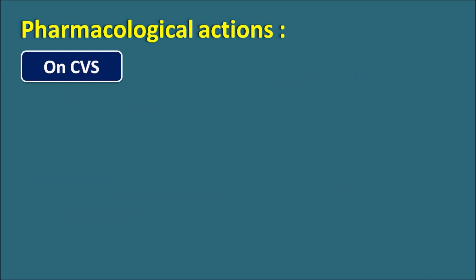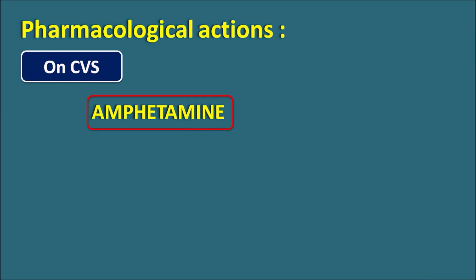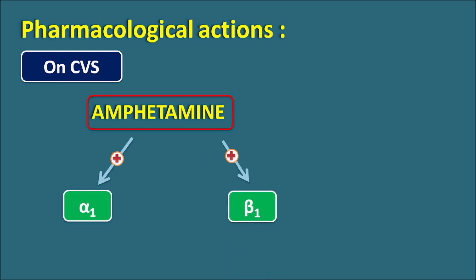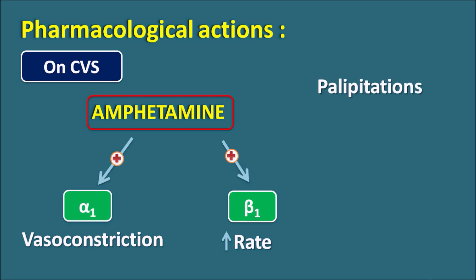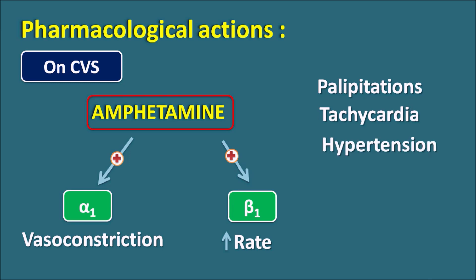Regarding the cardiovascular system (CVS): amphetamine, acting as an indirectly acting sympathomimetic, can activate alpha-1 receptors as well as beta-1 receptors by releasing norepinephrine. Alpha-1 receptors on vascular smooth muscle produce vasoconstriction, resulting in increased blood pressure. Activation of beta-1 receptors increases the rate and force of contraction of the heart. This produces palpitations, awareness of heartbeat, tachycardia, and at toxic doses, myocardial fibrillation and hypertension.